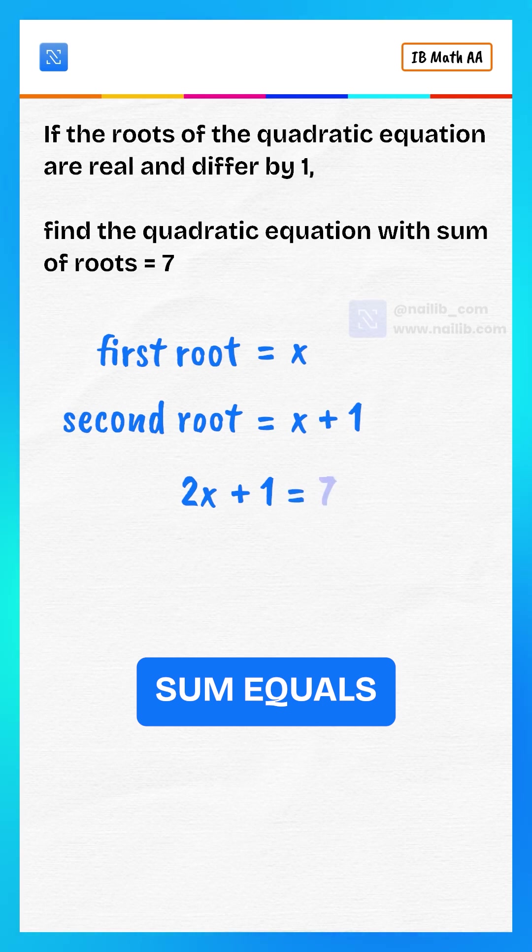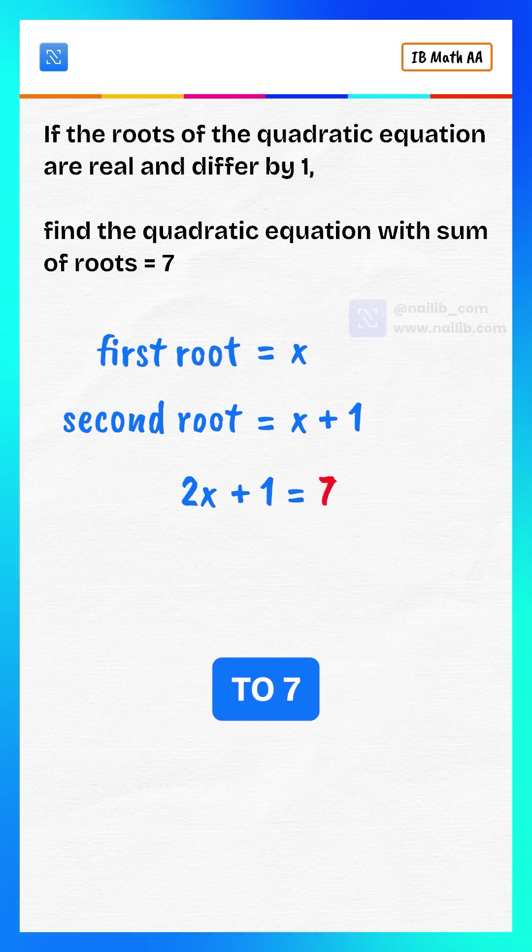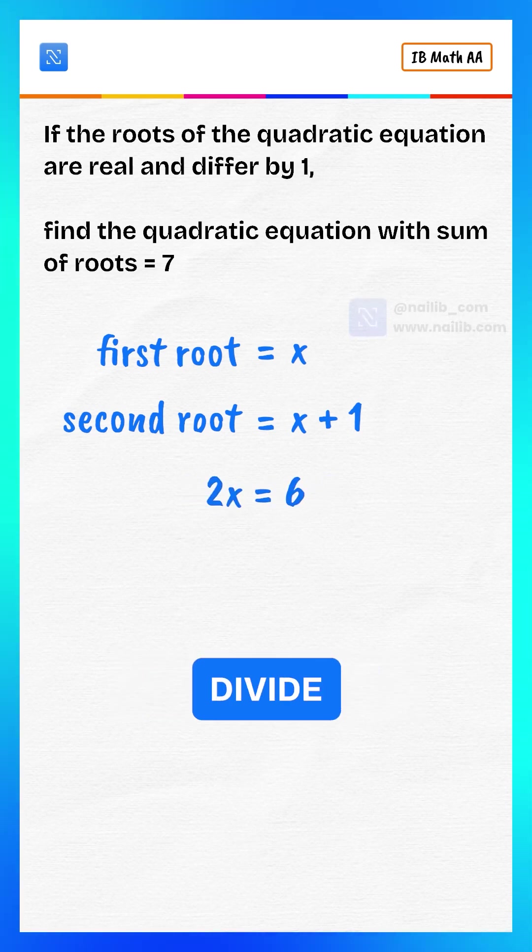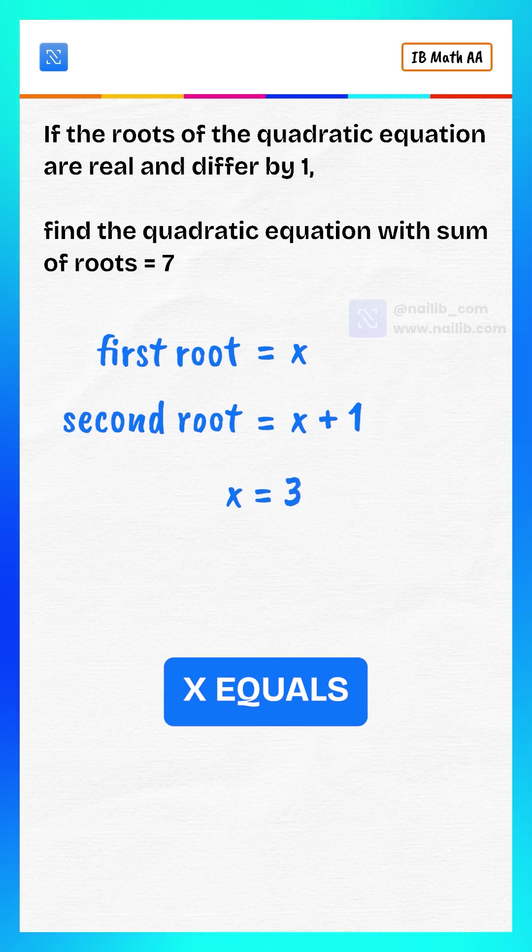We're given that this sum equals 7, so we write 2x plus 1 equals 7. Now subtract 1 from both sides, 2x equals 6. Divide both sides by 2, x equals 3.